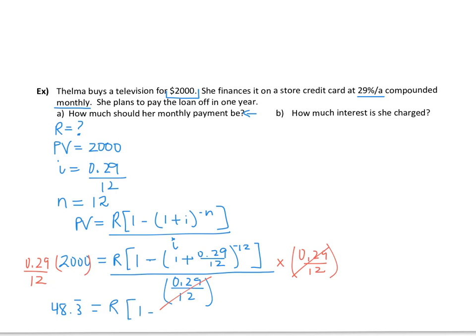And then we're going to divide out what's in the square bracket. We're going to divide both sides by this amount in the square bracket here. So we have, oh, I'm running out of room, R would be equal to the 48.3 repeating being divided by 1 take away 1 plus 0.29 over 12 to the exponent negative 12.